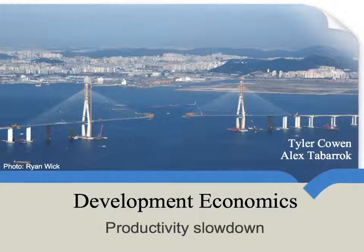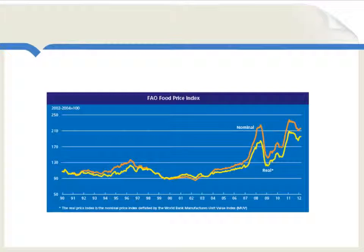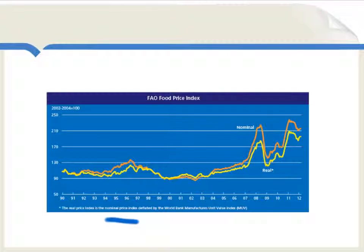Since the early 1990s, there's been a notable and somewhat troubling slowdown in the productivity of global agriculture. This graph shows food prices since 1990, expressed in terms of a general index. You can see that in the mid to late 90s there's somewhat of an increase in food prices, but there are two significant food price spikes, one coming in 2007 and the other more recently.